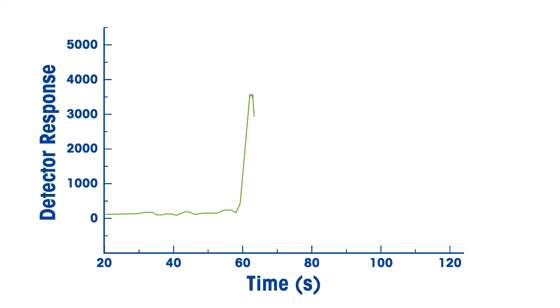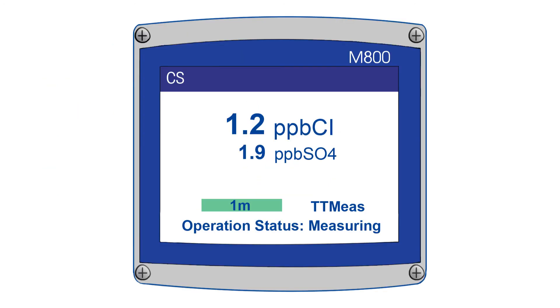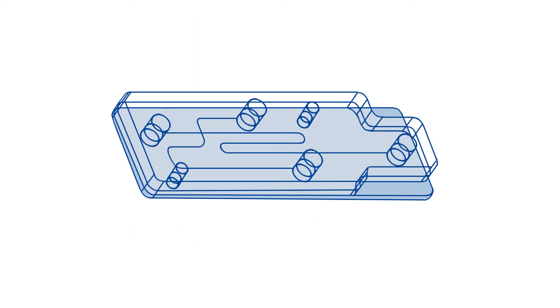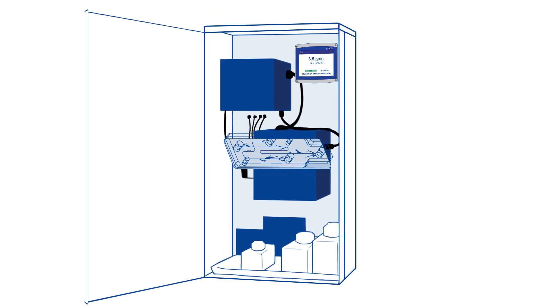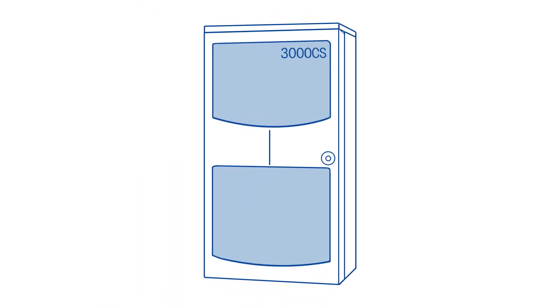Conductivity peaks for each ion, including an internal standard solution, are measured and processed to obtain the chloride and sulfate concentrations. This MCE cartridge is the heart of the 3000 CS analyzer and can measure chloride and sulfate in the range of 0 to 500 ppb.